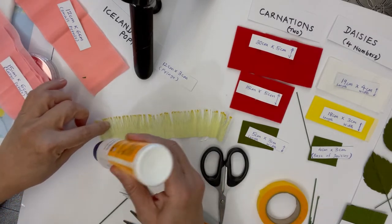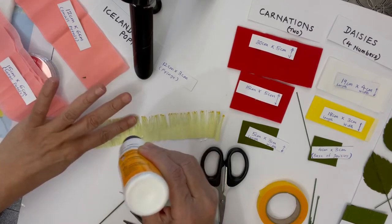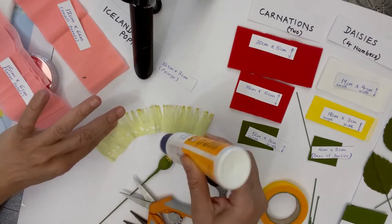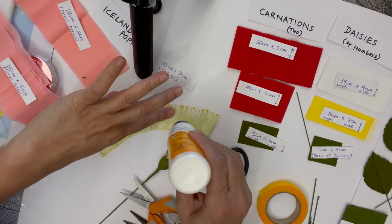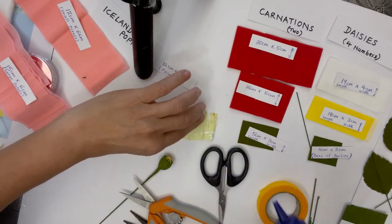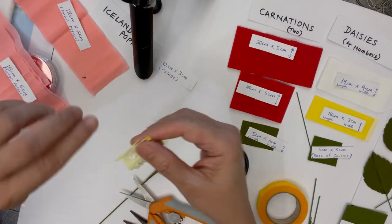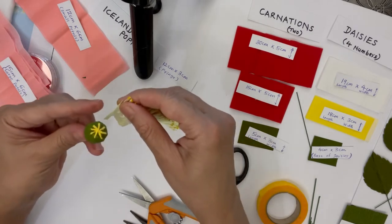Put some glue at the tip, not at the fringed end—it should be at the other end. And put it around the center.